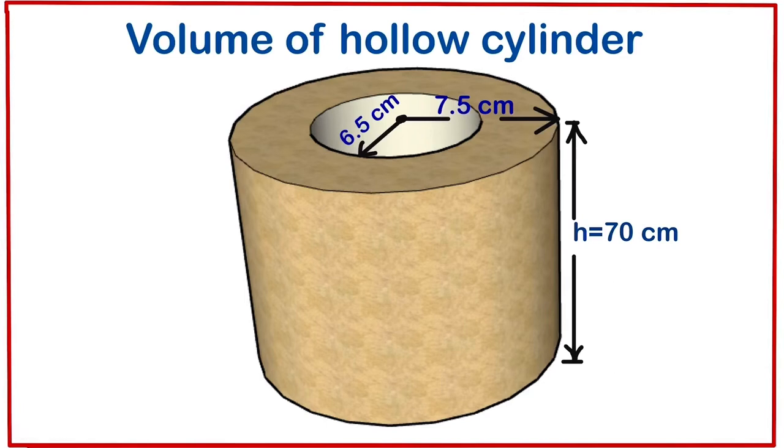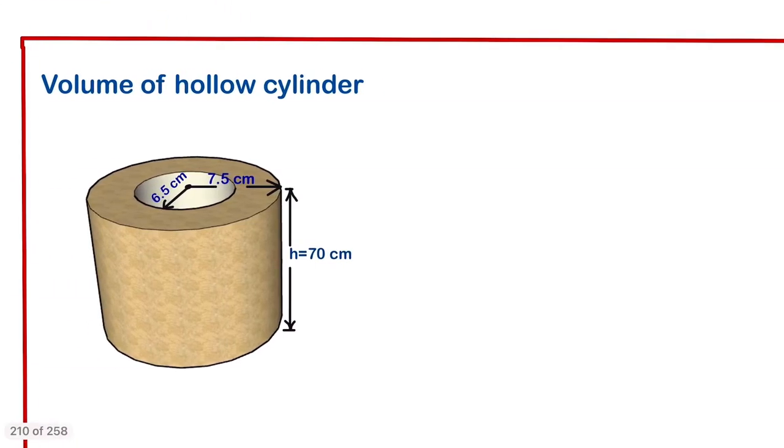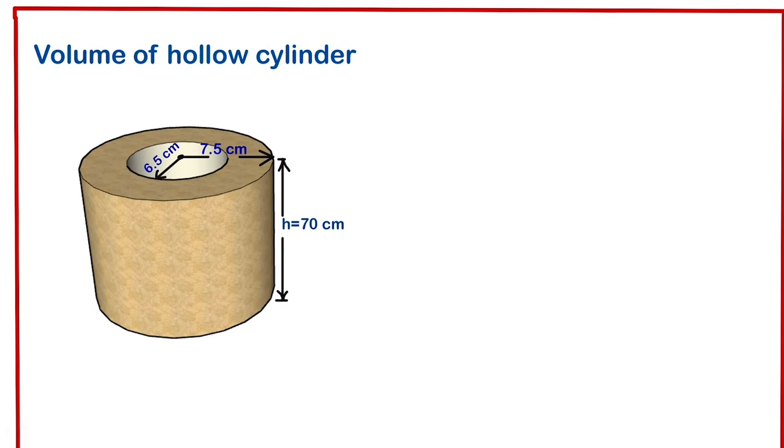Hello, today we are going to calculate the volume of a hollow cylinder. To calculate the volume of a hollow cylinder, you can write the general formula for a prism: volume equals the base area times the height.